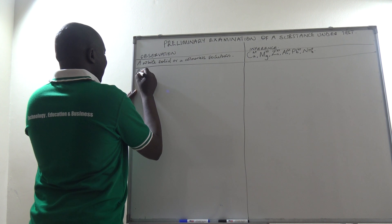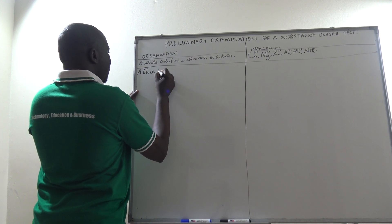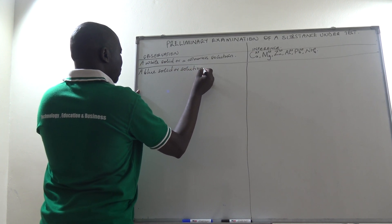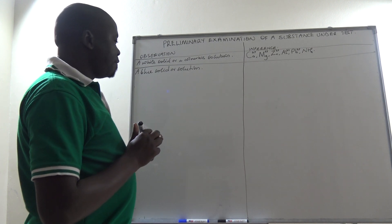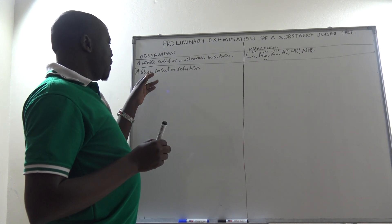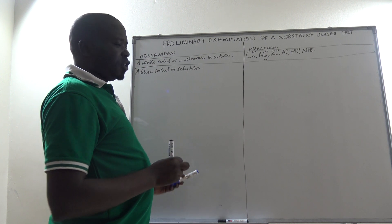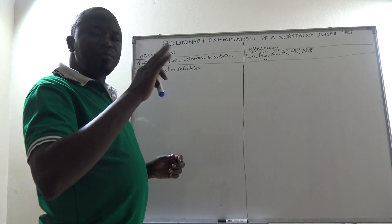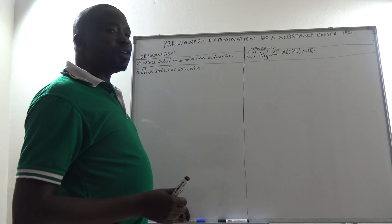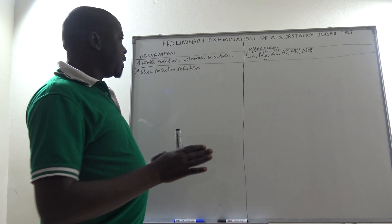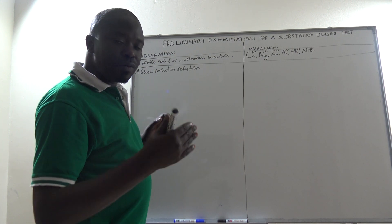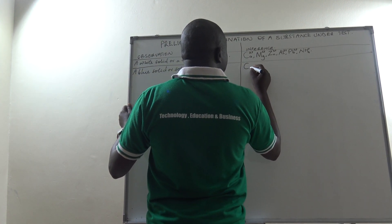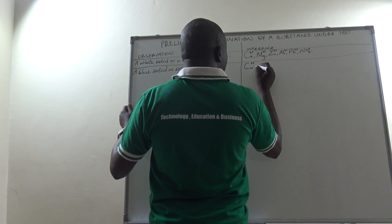If you have a blue solid or solution — it can be deep blue or light blue — or if the solution you have prepared is blue, even pale blue, then you just know that there might be copper two ions present. We are looking at colors going with the cations, the positive ions.